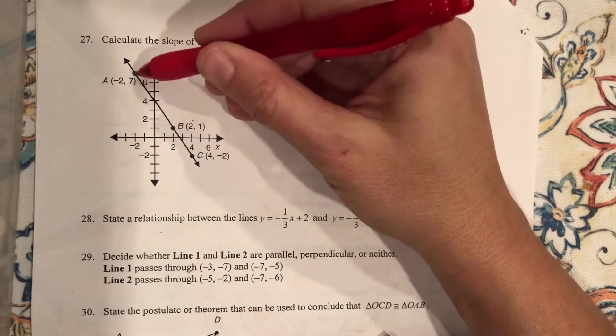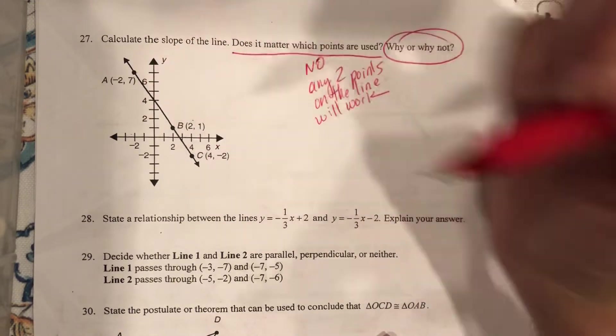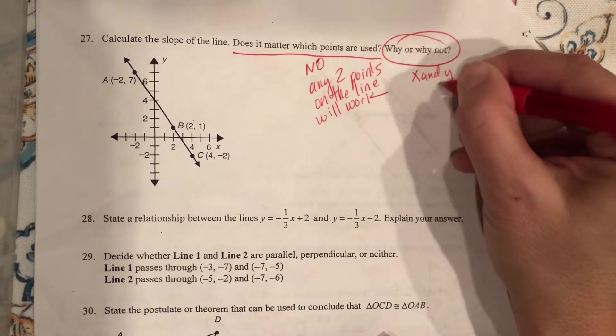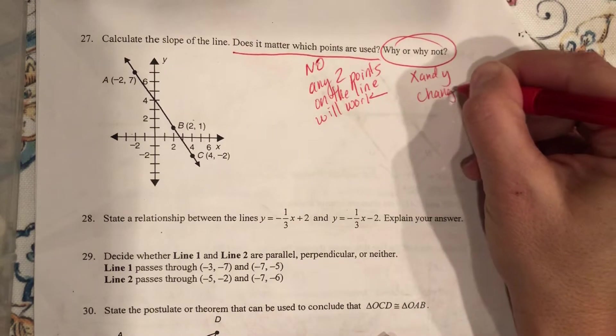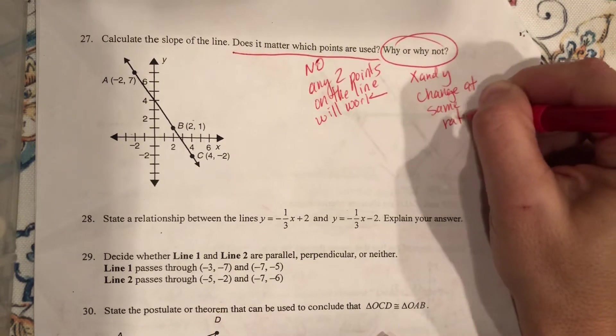If I choose these two points, they're both moving along. Your X and Y are still changing at the same rate. So X and Y change at the same rate for all points on the line.